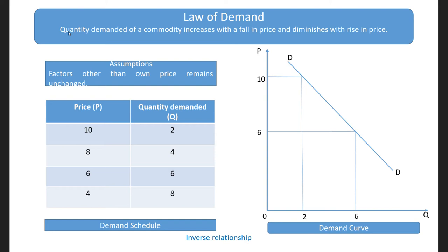Thus, when price is falling, quantity demanded is increasing. If we plot this behavior in a diagrammatic form, we get the demand curve. The demand curve shows the different combinations of price and quantity demanded.